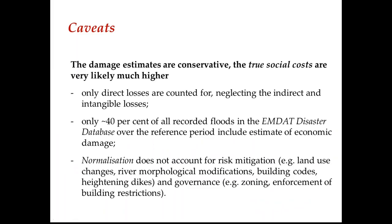All losses recorded in international and European disaster databases have some caveats. For example, only structural damage is typically recorded, which does not correspond to the true social cost of natural hazards. Many events in publicly available databases like MDAT do not include a comprehensive economic assessment. The normalization approaches I described can account for general economic and sociodemographic trends, but they cannot account for disaster risk reduction measures or risk governance improvements implemented over the period that certainly influenced the entity of disaster losses.